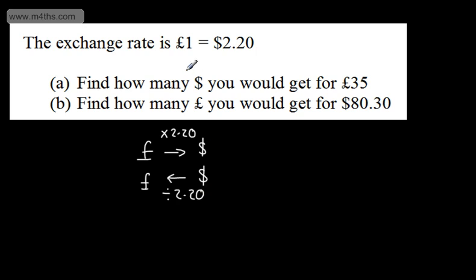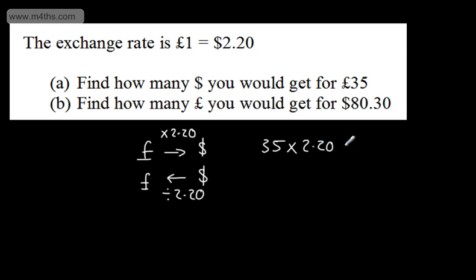Just think about this reasonably. If we convert pounds to dollars, it's going to get larger. If we convert dollars to pounds, it's going to get smaller. So let's convert £35 into dollars. All I do is take my 35 and multiply by 2.20. This is going to give me a larger value.